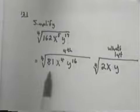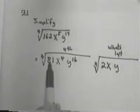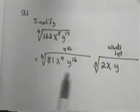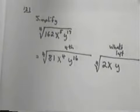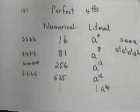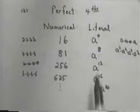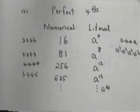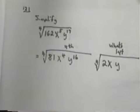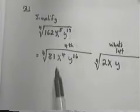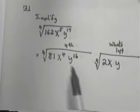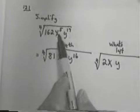Again, you ask yourself the two questions. Do I have a perfect 4th? Well, do I have 81, x to the 4th, and y to the 16th in my list? Right here is 81, x to the 4th, y to the 16th. So, they are all perfect 4ths. The next thing you ask yourself, if you multiply the two of them together, do you get 162, x to the 5th, y.